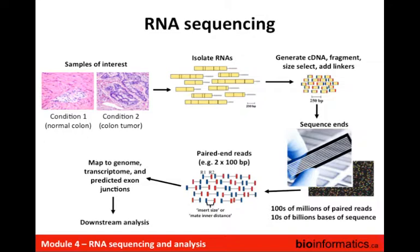The reason we use paired-end reads: initially it was because the read lengths generated by next-gen sequencing instruments are not long enough to accommodate sequencing the entire cDNA. If the read can only be 40 base pairs long, you don't really want to be sequencing 80-base cDNA fragments because they're kind of too small. You get more information by having short reads that correspond to the ends of a fragment that's larger.